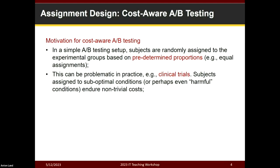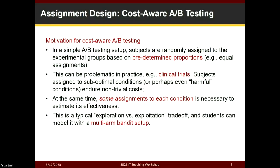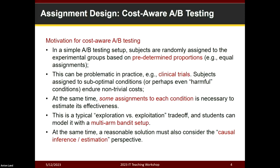Subjects assigned to less-than-optimal conditions bear certain costs because of your assignment. At the same time, you cannot eliminate assignment to all conditions — you have to make some assignment to each one, even if some turn out to be bad, because otherwise you won't know whether they're good or bad. This is a classic exploration versus exploitation trade-off: exploration because you have to assign some people to explore treatment quality; exploitation because you don't want to keep assigning people to suboptimal conditions. Students model this trade-off using the multi-armed bandit model, with the extra consideration of causal inference and estimation.